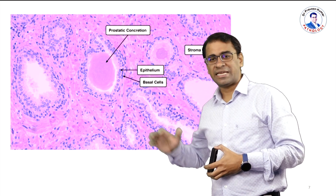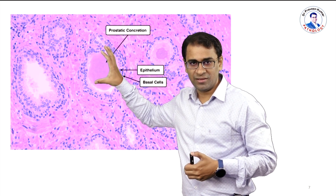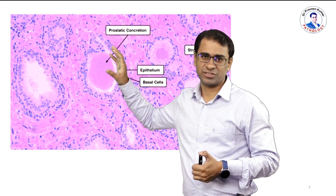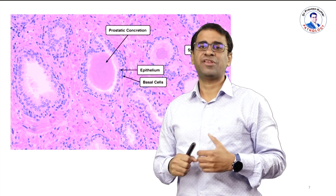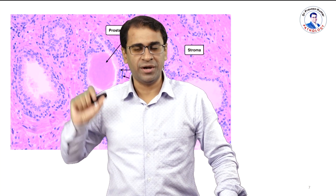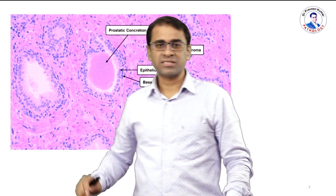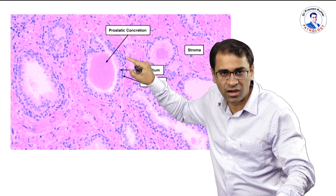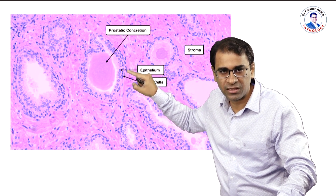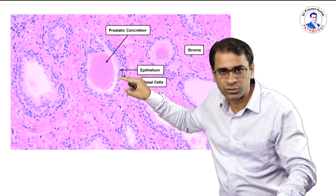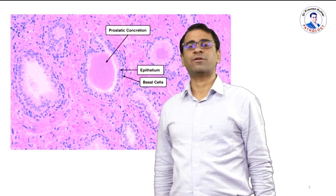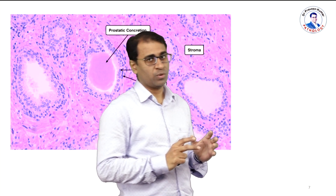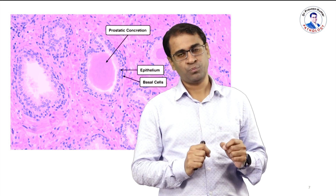Look at this image now. What you are seeing in the glands are these concretions — they are called prostatic concretions. They are actually secretions of the prostate which have occluded these glands. What else you see is, you can very clearly see the basal cell. This dark blue spindle shape — that is the basal cell. And this epithelium here is actually the glandular cell. This is how a normal prostate looks like.